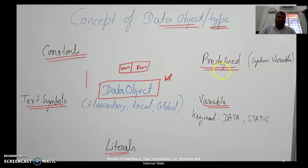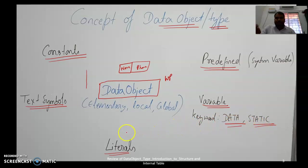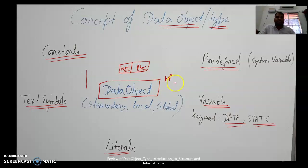Predefined variables are system variables, which are already in the system. Variables are the most commonly used data objects — we define them using the keyword DATA or STATIC. The type of the data object, whether character or numeric, determines the processing done by the work process in the application layer, and accordingly the program works.